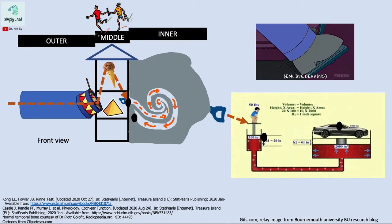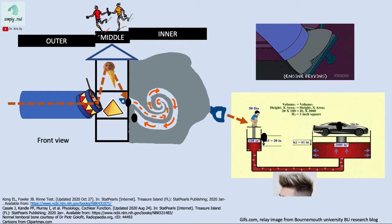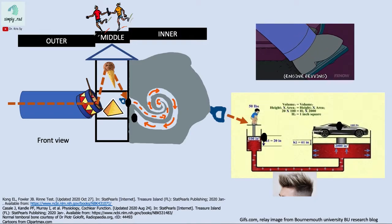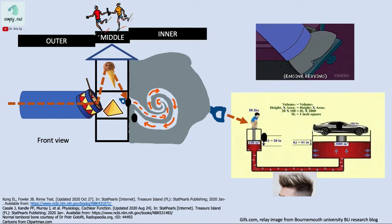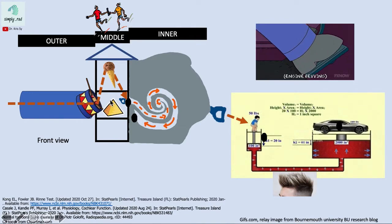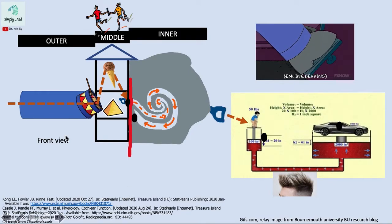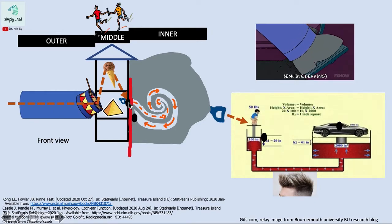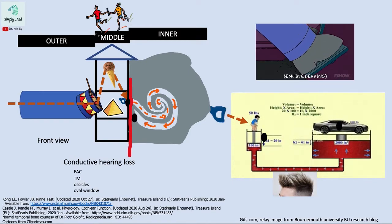The movement in the fluid stimulates the hair cells, which when stimulated create electrical energy sent to the vestibulocochlear nerve. For today we're going to cover the structures from the outer to the middle ear. Anything that impedes the transmission from outside up to the level of the oval window would create a conductive hearing loss.